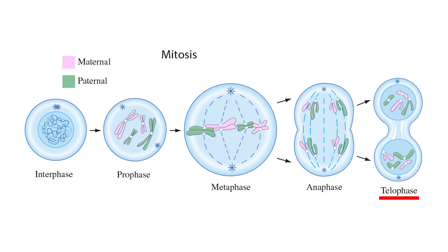Telophase: in this stage, chromosomes begin to decondense back into chromatin. The nuclear membrane reforms around each set of chromosomes. Spindle fibers disassemble.